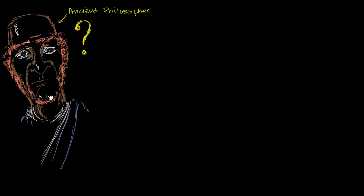Let's say that you are an ancient philosopher who is building up mathematics from the ground up. You already have a reasonable understanding of what a negative number could or should represent, and you know how to add and subtract negative numbers. But now you are faced with a conundrum: what happens when you multiply negative numbers — either a positive times a negative, or two negative numbers?